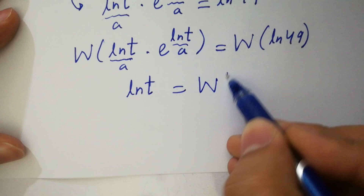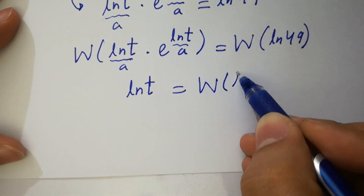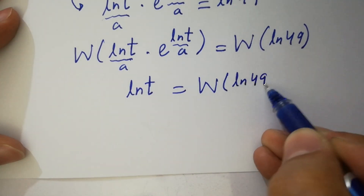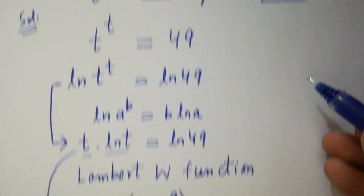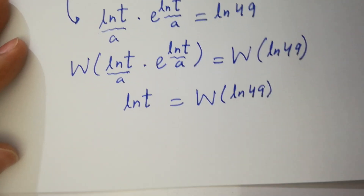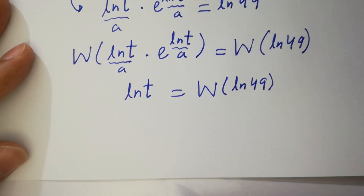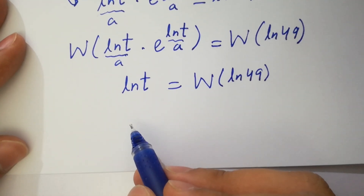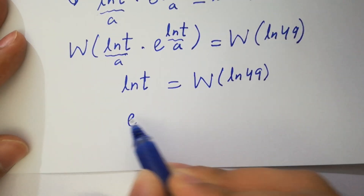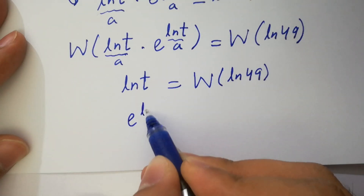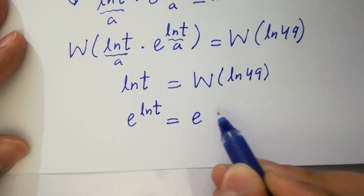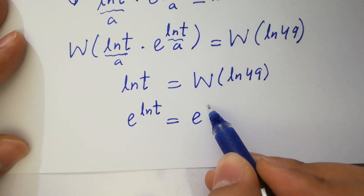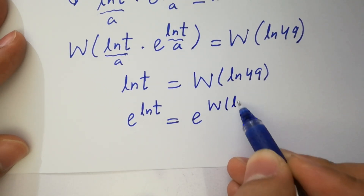And here W(ln 49) as it is. To find the value of t, we take base e on both sides: e to the power ln t equal to e to the power W(ln 49).